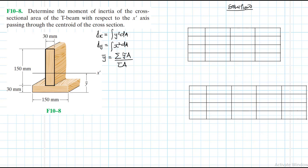So that will be our part one, and then let's define the other part. Let's define the coordinate axis. This is X and this is Y. Let's define the centroidal location with respect to the X axis.